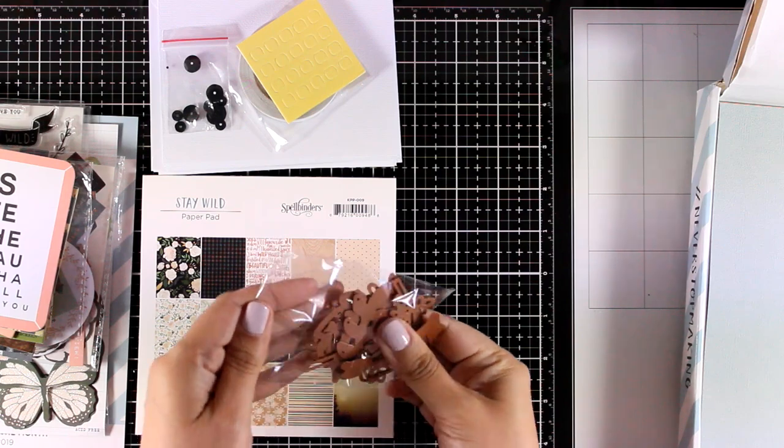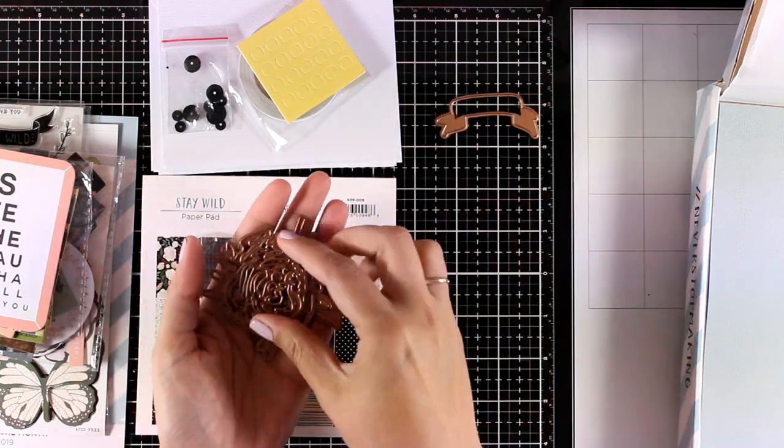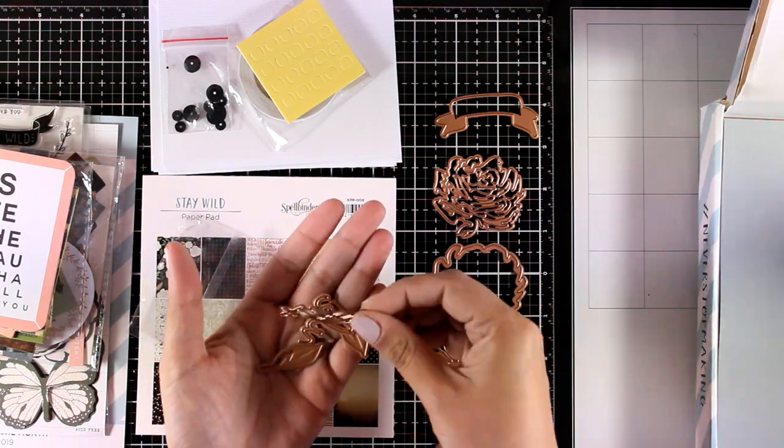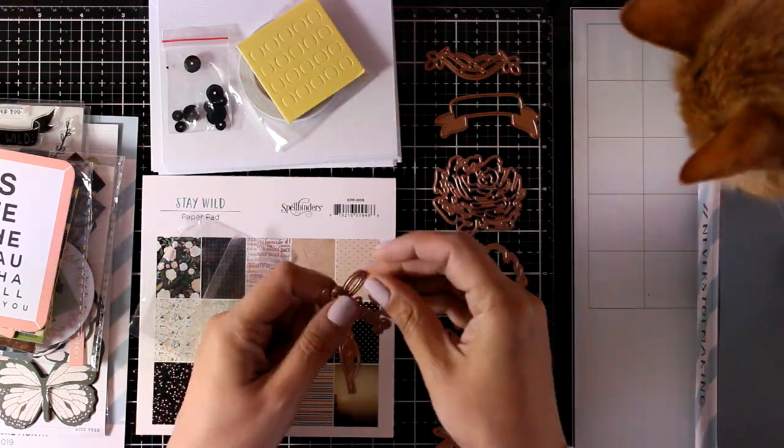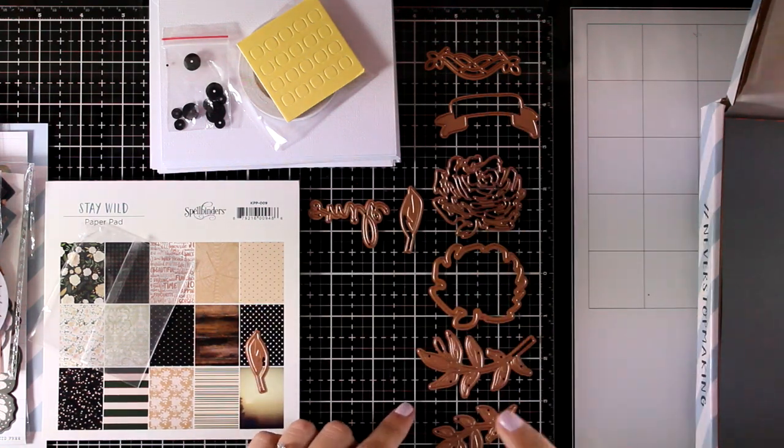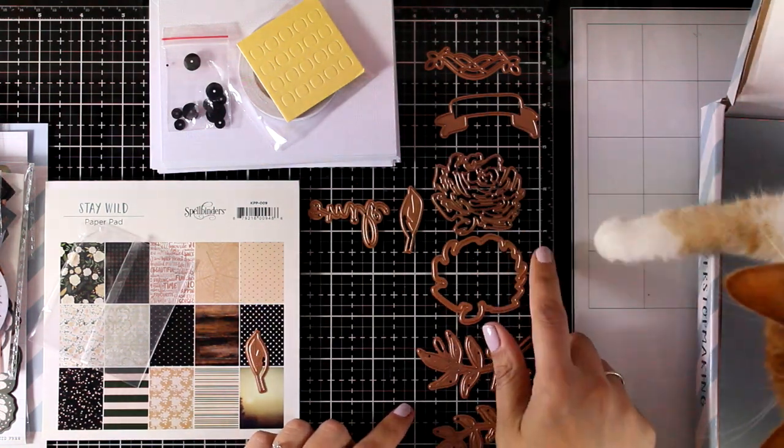Now let's take a look at the dies. This banner matches one of the stamps, you will get a layering flower, you will also get leaves, a die that cuts out the word smile. And these are nine dies in total. Lovely dies, really versatile.